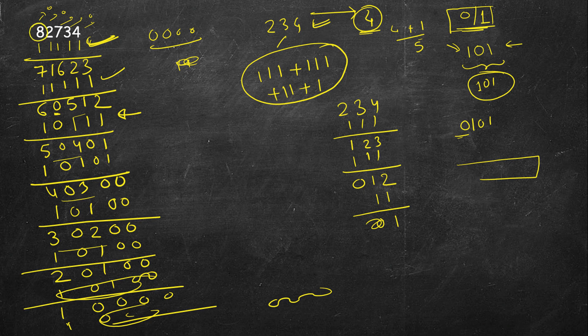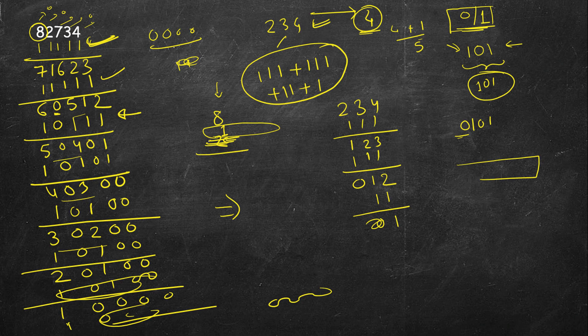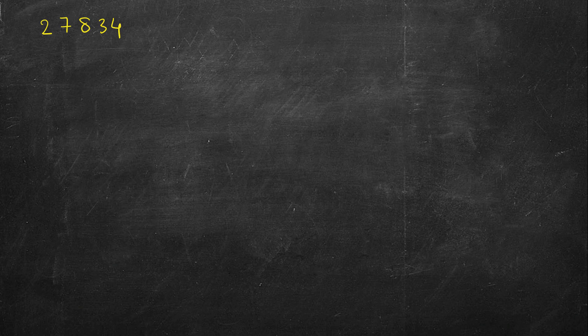To bring all digits to 0, you must subtract at least as many times as the maximum digit — you can't subtract 2 at any position since 2 cannot appear in a decibinary number. The maximum digit here is 8, so it takes exactly 8 steps. The answer is equivalent to the maximum digit. Let's verify: rearrange 82734 as 27834 — same digits in a different order.